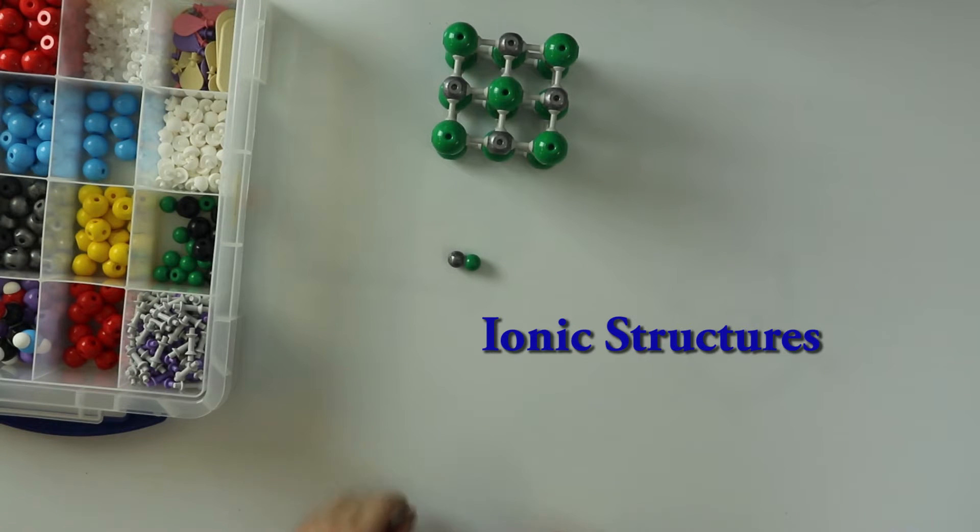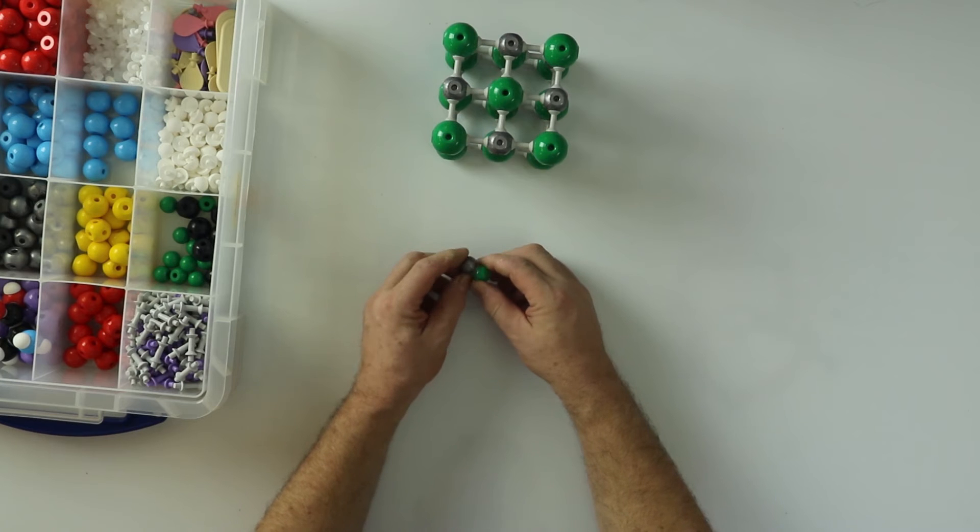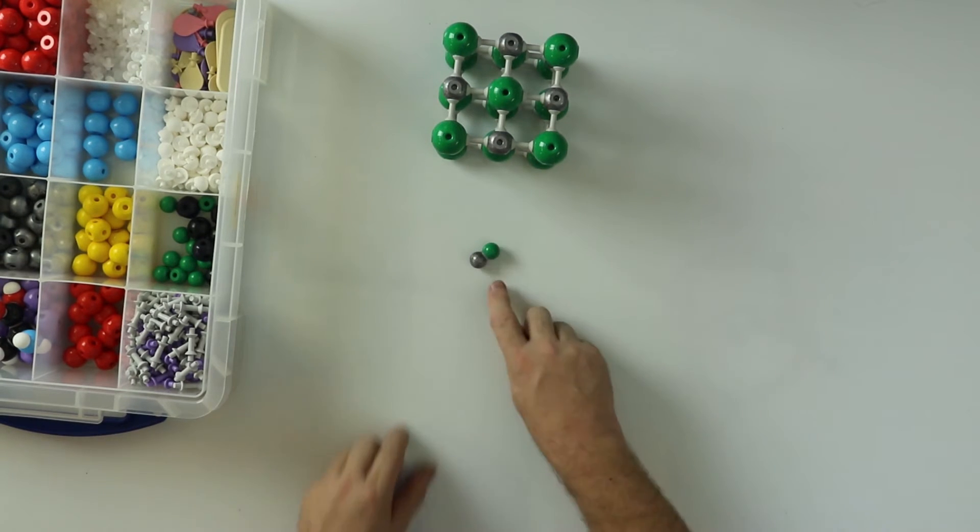Ionic bonding. If we take sodium and chlorine, it would appear at first that we get a molecule of salt, which is made from sodium and chlorine.